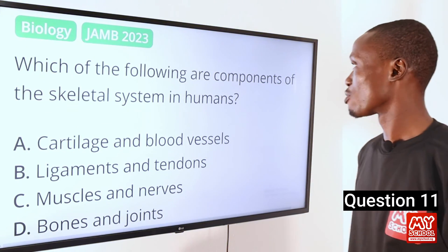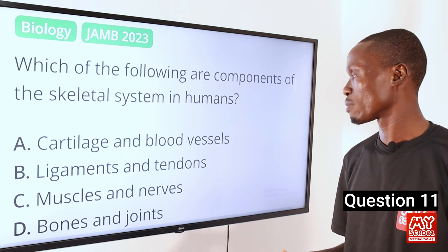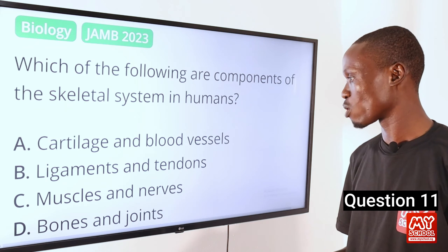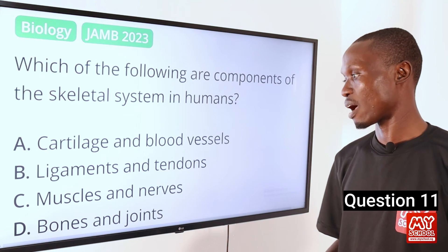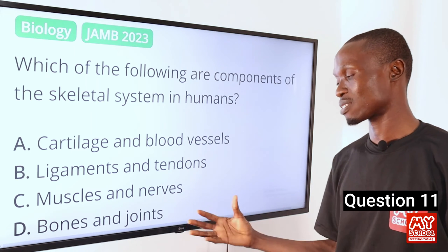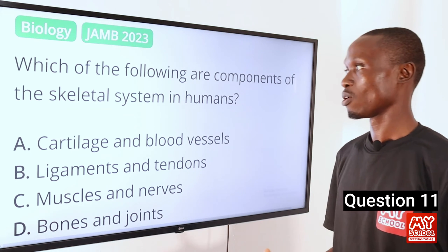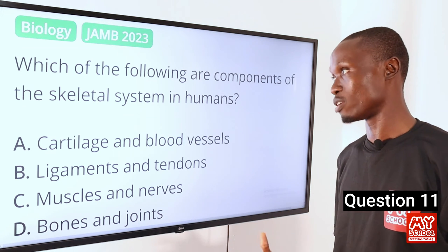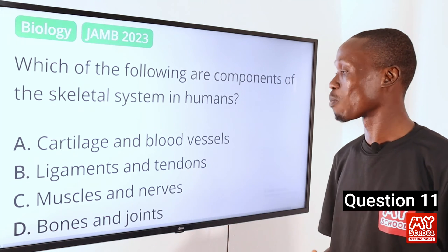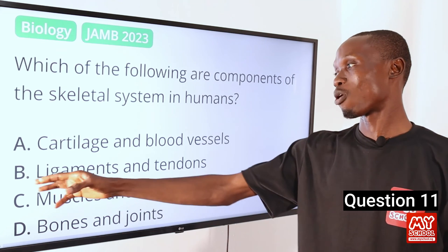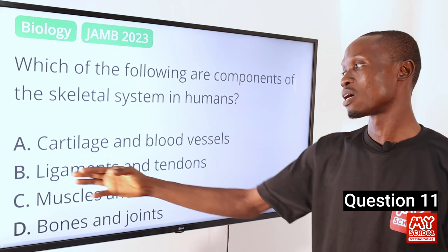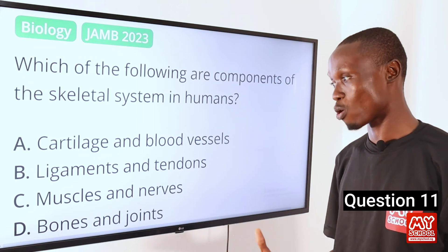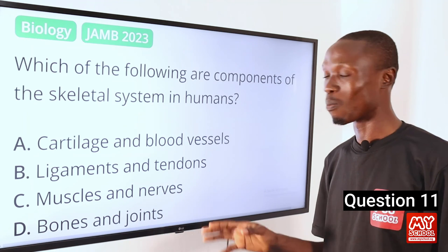Question 11. Which of the following are components of the skeletal system in humans? A, cartilage and blood vessels. B, ligaments and tendons. C, muscles and nerves. D, bones and joints. The answer is option D — the skeletal system is primarily made up of bones and joints. Note that ligaments connect joints to joints, and tendons connect bones to muscles, but the primary components are bones and joints.